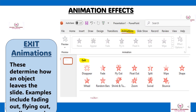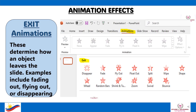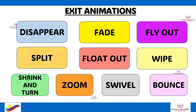Exit animations determine how an object leaves the slide. Examples include fading out, flying out, or disappearing. Here are the exit animations.